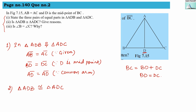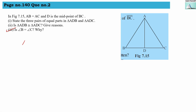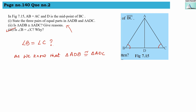Second question: why are these two triangles congruent? Because as per SSS criteria, all three pairs of sides are equal. Third question: is angle B equal to angle C — yes or no, and why? We know triangle ADB is congruent with triangle ADC, as proved earlier. Therefore angle B equals angle C because they are corresponding angles in congruent triangles.